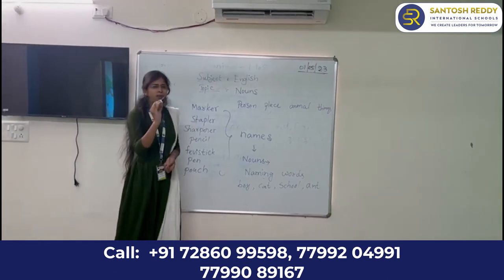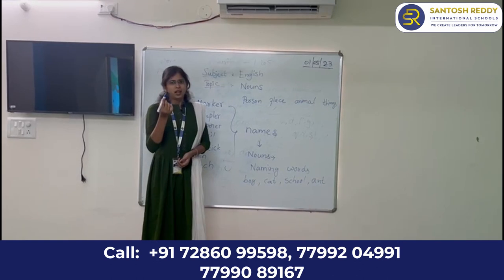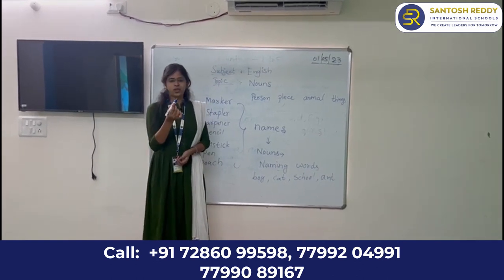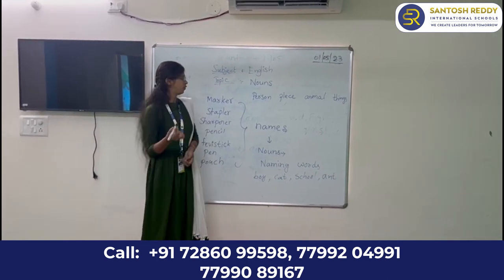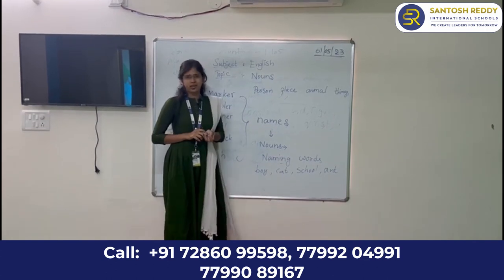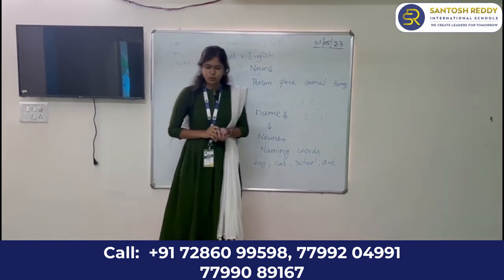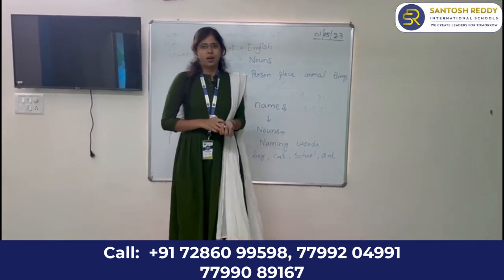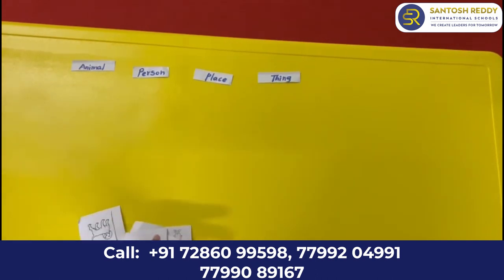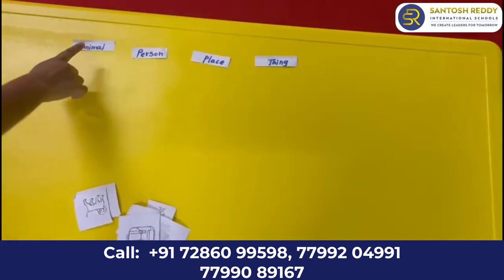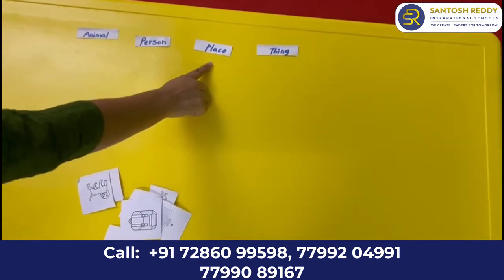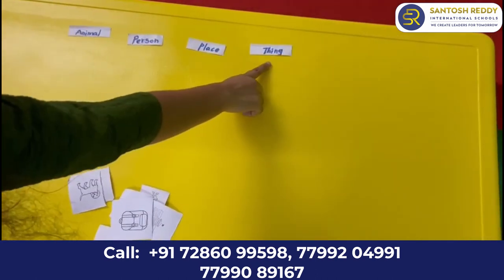For example, marker — is it alive? No, it does not have a life. So, it is a thing. Let us do a small activity to understand more deeply about nouns. Here we have animal, person, place, and thing. So, here we have some pictures also.